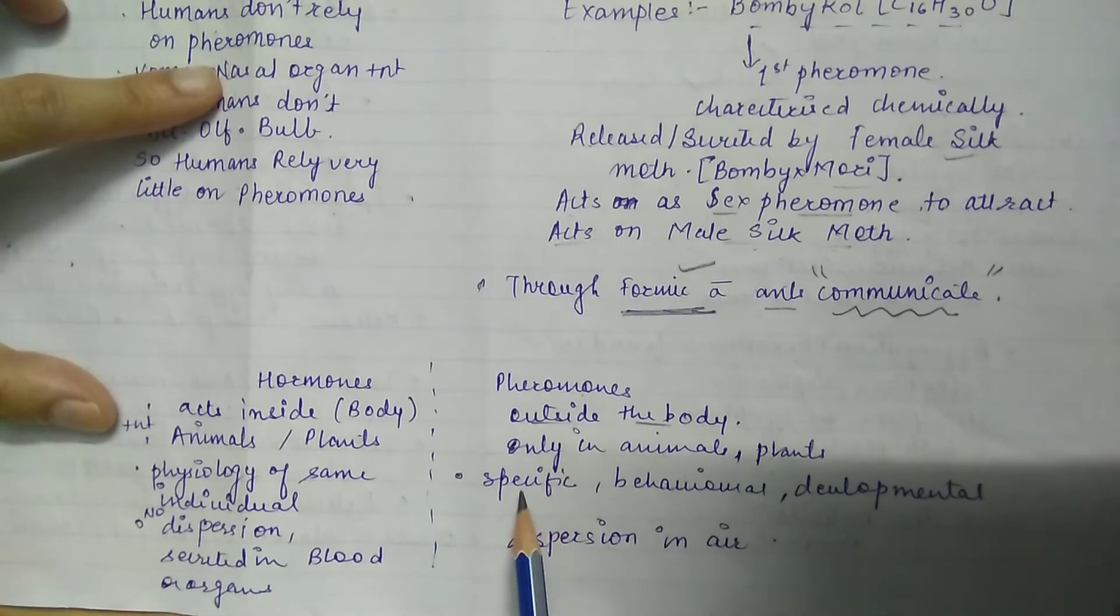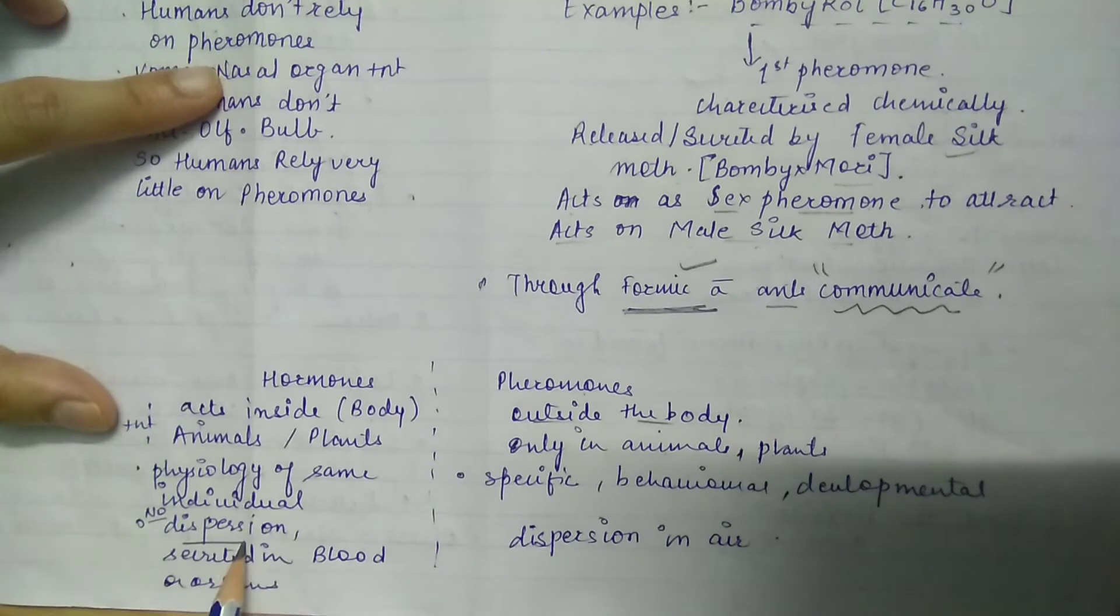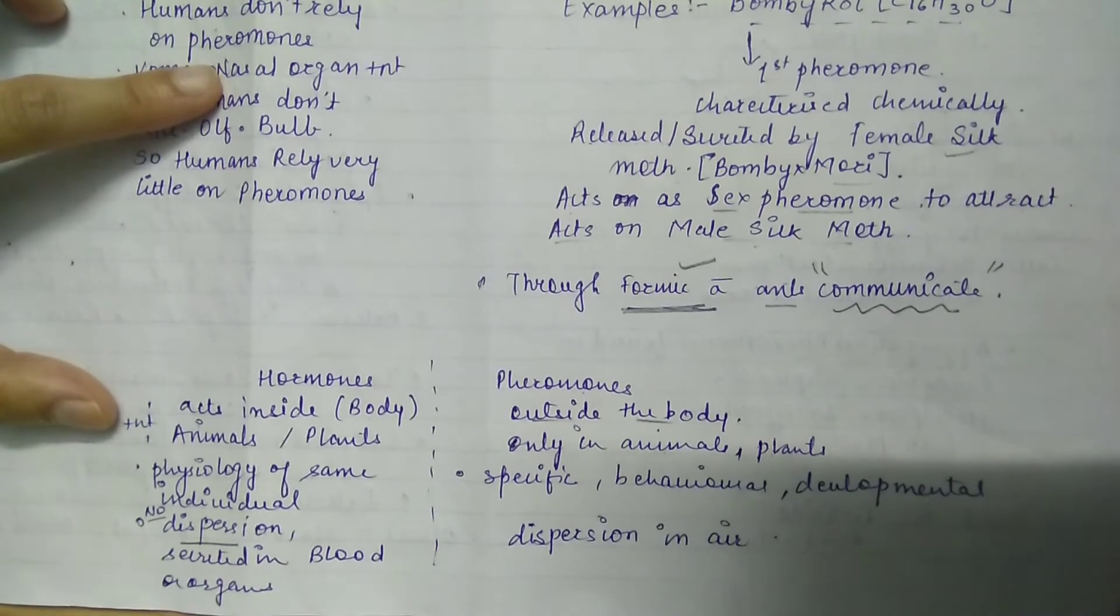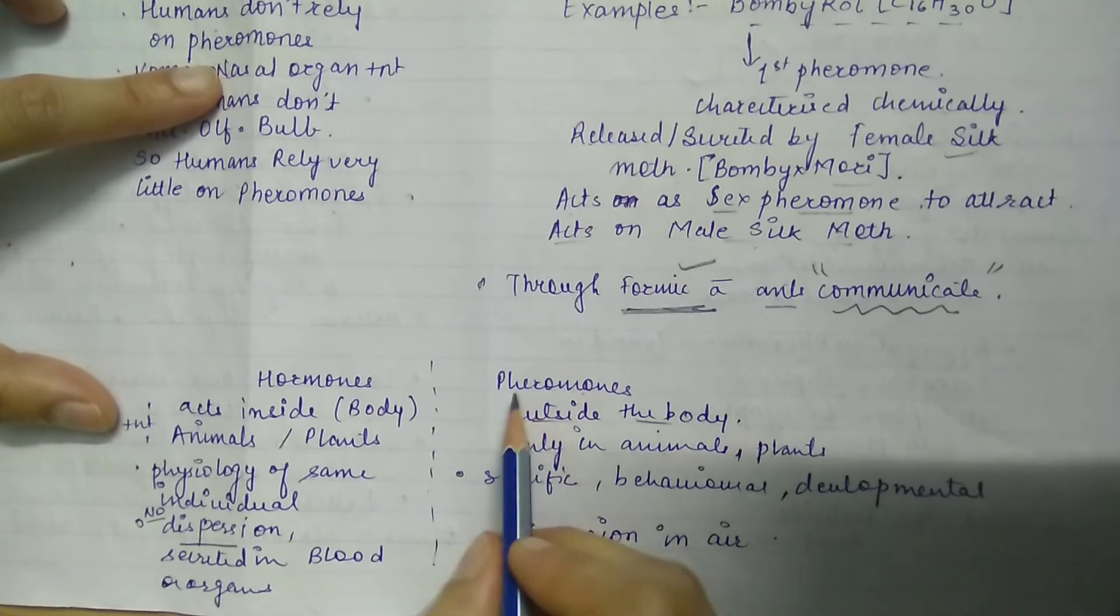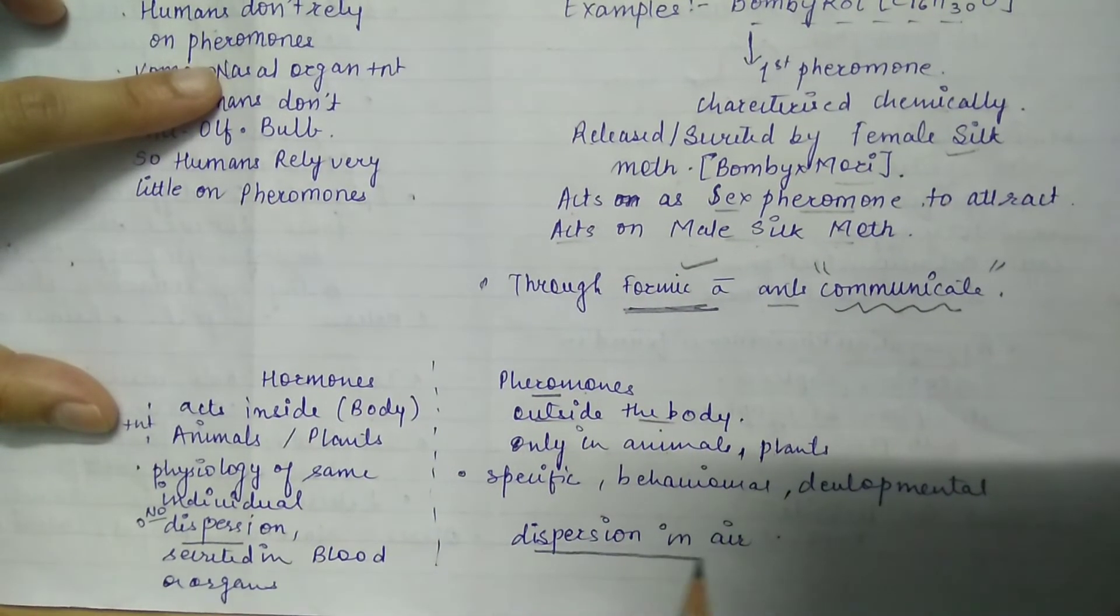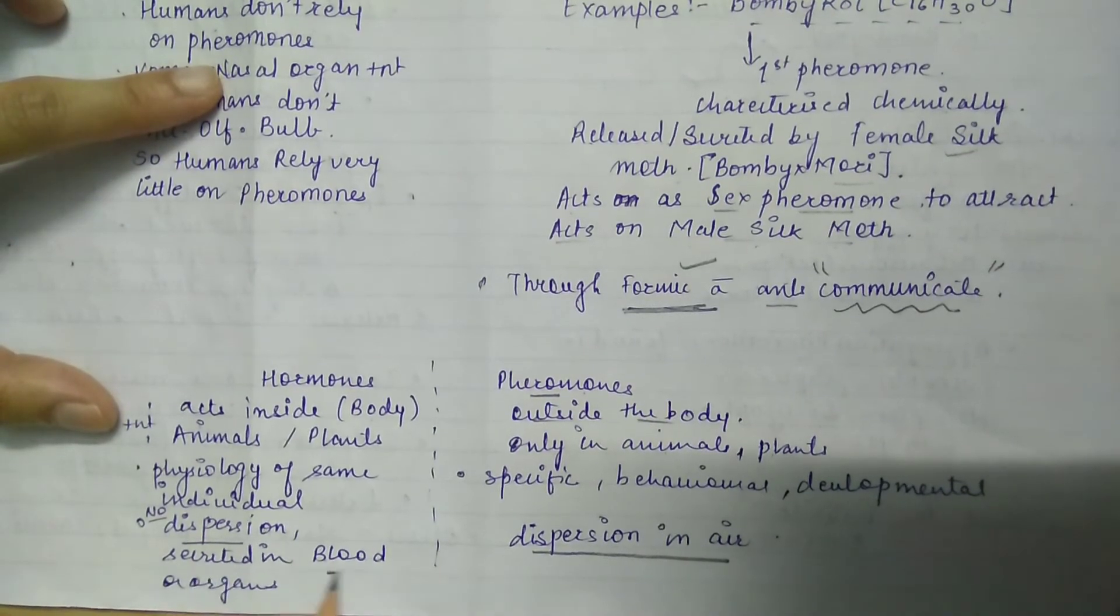Pheromones are species specific; they affect behavior and development. With hormones, there is no dispersion—you will never see any organism disperse hormones in the atmosphere. If dispersed in the atmosphere, it will be pheromones. Dispersion in air indicates pheromones.